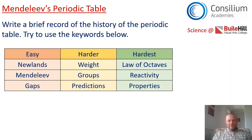How clever is Dmitri Mendeleev! He realised that not all the elements had been discovered, laid out the table, left gaps for those elements, and in those gaps made predictions about what those elements would be like. A fantastic genius of a man.